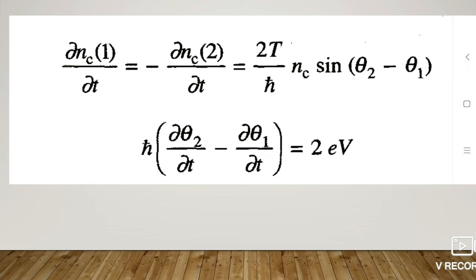The second equation: ℏ(∂θ₂/∂t - ∂θ₁/∂t) = 2eV. Here, θ₂ - θ₁ is the phase difference between the two states of superconductors, T is the characteristic coupling constant, and nc is the Cooper pair density.